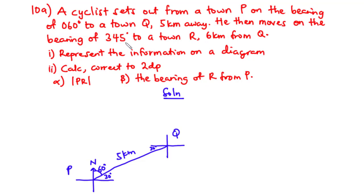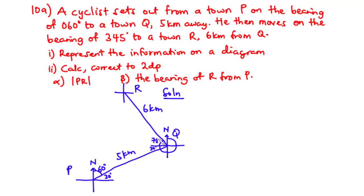Now he then moves on the bearing of 345 degrees to a town R. At point Q, from the geographical north, this is 90 degrees, 180, 270, and then 345 minus 270 is 75. So we have an additional angle of 75 degrees to point R, which is 6 kilometers away from Q. The total angle at Q is 105 degrees. Now let's complete the triangle. So we've been able to represent the information on a diagram — that is Part I.